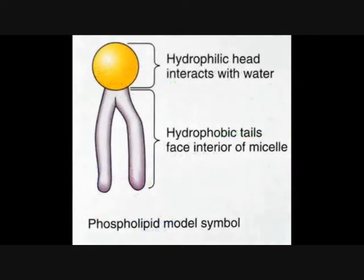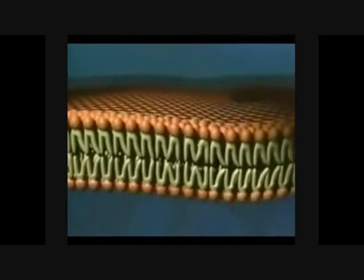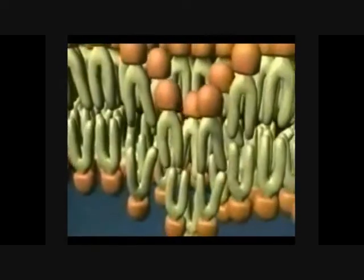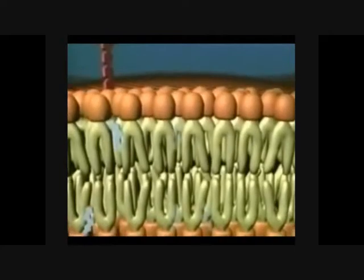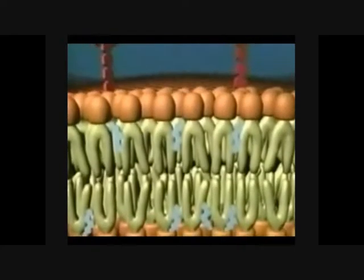Due to the hydrophobic nature of the long fatty acid hydrocarbon chains, in humans, phosphoglyceride molecules are arranged into a bilayer. This enables the hydrophobic hydrocarbon chains to be separated from water molecules that are both outside the cell and within the cytoplasm. Cholesterol reduces the fluidity of this membrane, and glycoproteins act as receptors for antigens and general cell-to-cell recognition.